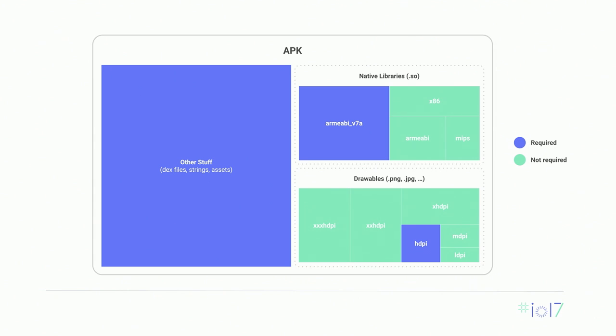You could in the past manually create device-specific APKs by generating multiple APKs, each with only one density and one native architecture. But it's a lot of effort, and in fact we recommended you didn't do this because it's so complicated — we found that less than 1% of apps on the Play Store actually do this. But now, with Google Play app signing, we can automatically generate these APKs for you and deliver to each device only what that device needs.